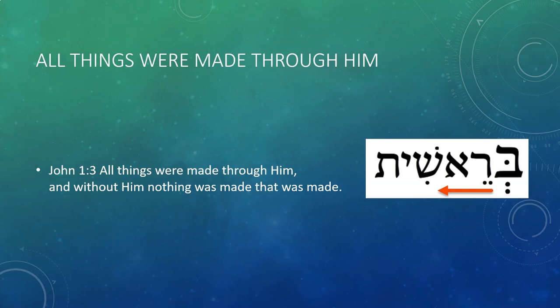Furthermore, when you read the Hebrew Bible, sometimes some letters are written larger than normal, other times smaller than normal, and there is no set pattern to this. The scholars and scribes have faithfully copied the Scriptures from generation to generation, keeping those same large and small letters without explanation. One of those instances of a large letter is the first letter of the Bible, the Bet — drawing our attention to it, as if being highlighted, saying there's something about this letter you need to take notice of. I believe this is a sign pointing to the fact that all of creation came through the Son.